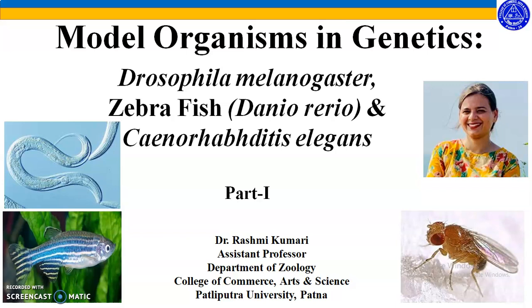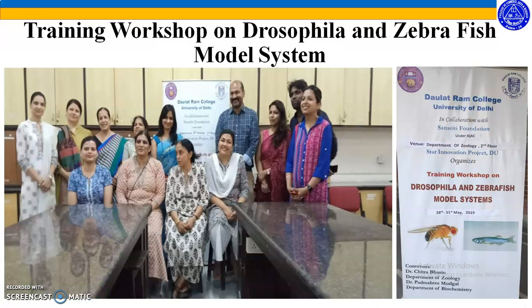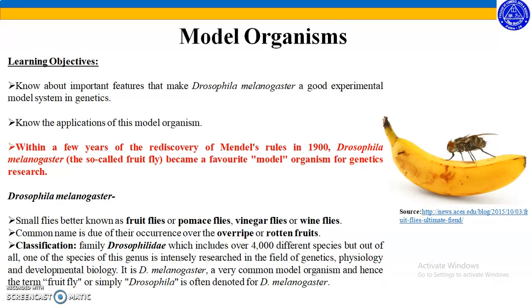As we all know, the Drosophila genome shares a major part of it with the human genome, and many neurodegenerative diseases and neuropharmacological research are currently under study. After seeing this video lecture, we will come to know about the important features that make Drosophila melanogaster a good experimental model system in genetics, and also know the applications of this model organism.